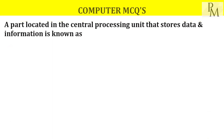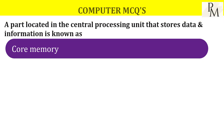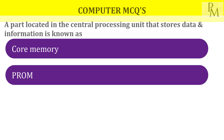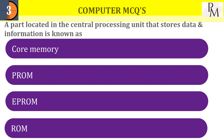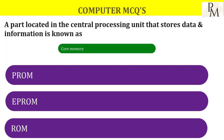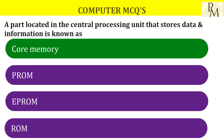Next question: a part located in the central processing unit that stores the data and information is known as? The central processing unit CPU stores the data. The answer is core memory.